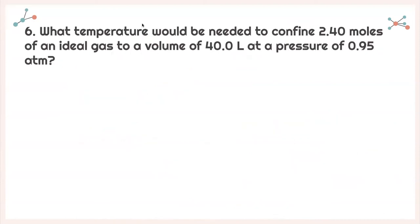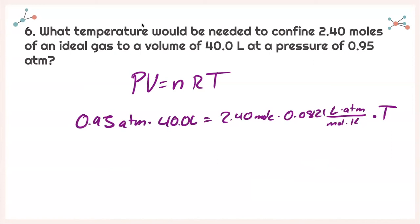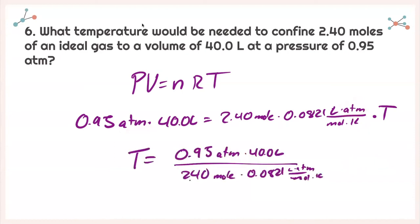For number six, what temperature is needed to confine 2.40 moles of an ideal gas to a volume of 40.0 liters at a pressure of 0.95 atmospheres? I write PV = nRT and plug in all given values: pressure, volume, moles, and the R value matching atmospheres. I isolate T and plug everything into my calculator to get a final temperature of 193 Kelvin.